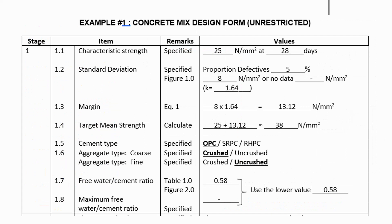The standard deviation is read from line A, and the value is 8 N/mm² as shown by the red dotted line. Then, the margin of concrete mix is calculated by multiplying the standard deviation by constant K. Next, calculate the target mean strength. The given cement type is OPC, coarse aggregate is crushed, and fine aggregate is uncrushed.